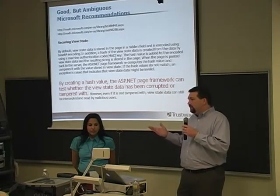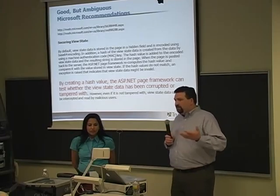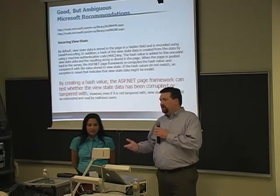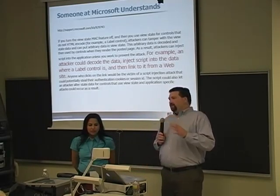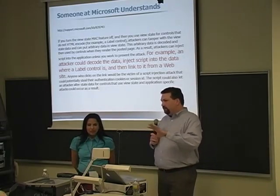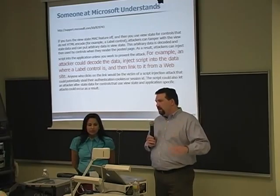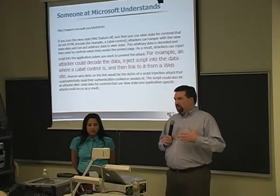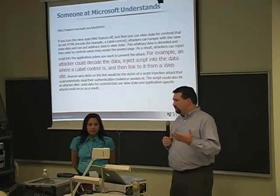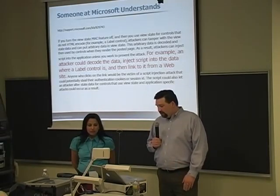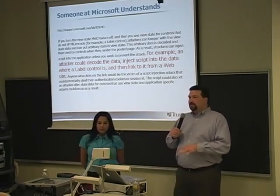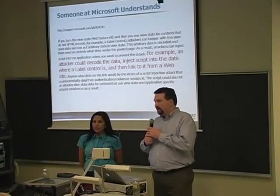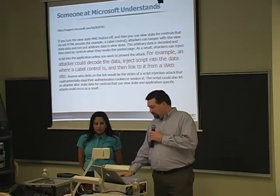Their security mechanism was well designed, and they imply that corruption and tampering is bad, so enabling it must be good. But they're not coming out and saying that if you don't enable it you'll be vulnerable to certain attacks. After many hours of digging, I found one reference at Microsoft to the type of attack possible with .NET. There's a troubleshooting document where the author says an attacker could decode the data in the view state, inject script into the data where a label control is, and link to it from a website — which is a working definition of cross-site scripting.